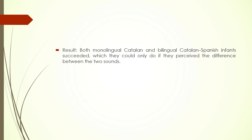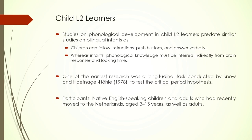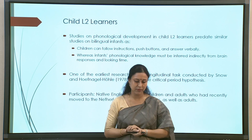Both monolingual Catalan and Catalan-Spanish bilinguals succeeded, which they could do only if they perceived the difference between the two sounds. If a sound was heard, they looked to see whether their eyes moved to the predicted position — that way they could determine that the contrast between the two sounds had been identified by the brain. Both bilinguals and monolinguals were found to do well because these contrasts exist in their language.